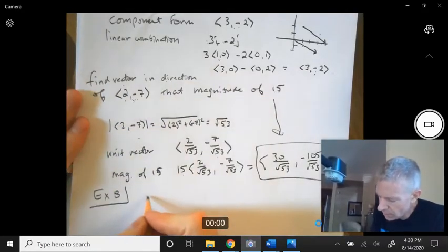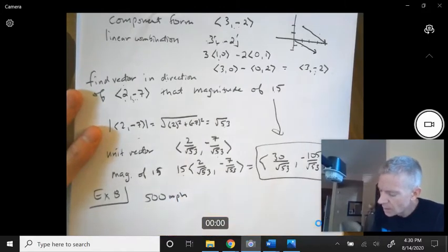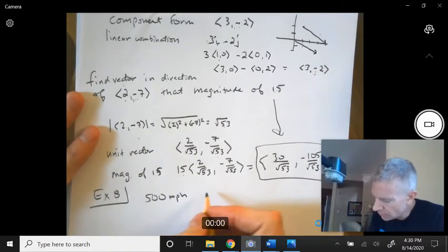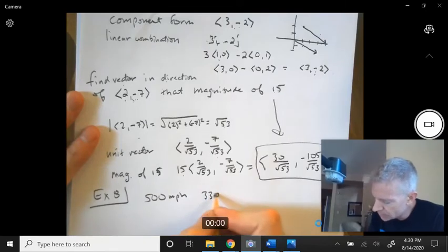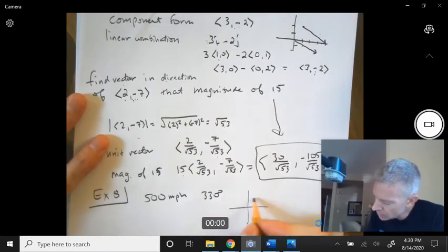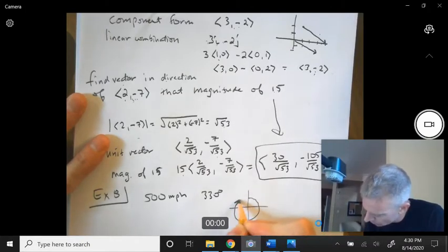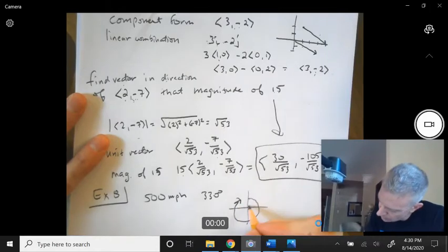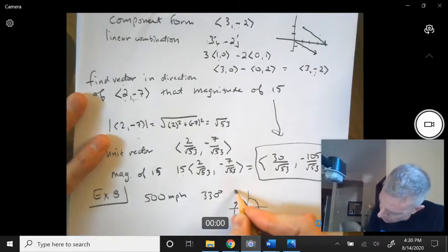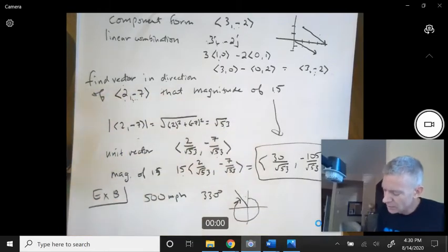There's a plane flying through the air, initially flying 500 miles per hour at a bearing of 330 degrees. Remember, the degrees are measured clockwise from the north, so that's 330 degrees. So this angle up here would be 30 degrees.